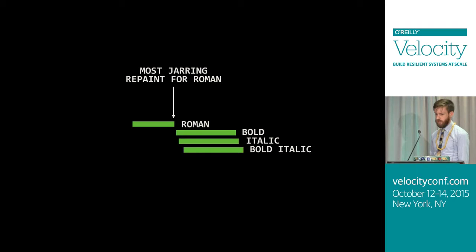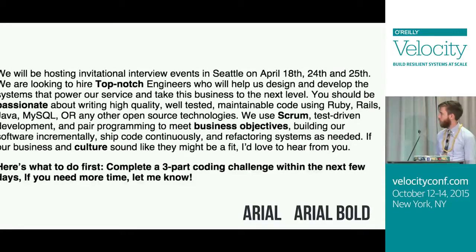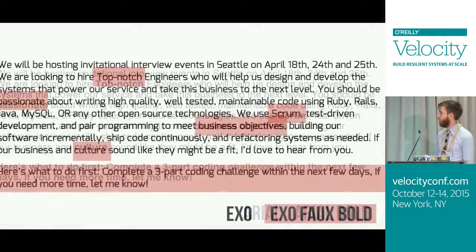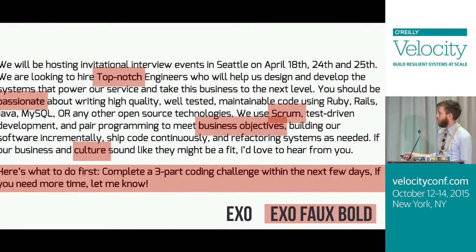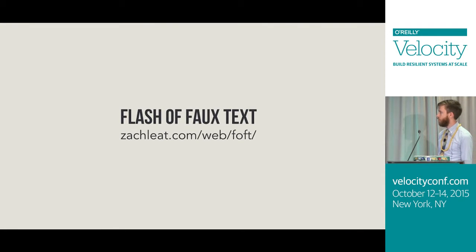Another approach is the Flash of Faux Text: load your Roman font first, then load bold, italic, and bold-italic fonts. In between, while those are loading and your Roman is loaded, use faux versions — faux bold and faux italic of the fallback. When the bold and other weights load successfully, re-render just those portions. The code example is more complicated — check my website for details.